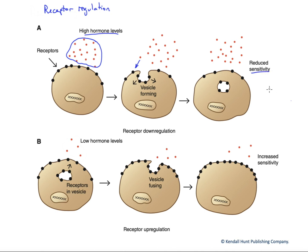Now, it might sound like we're sort of canceling out the activity of this high hormone level for which there was a stimulus. However, the end goal here really should be viewed as avoiding an excessively large response to high hormone levels, which can lead to a disease process.